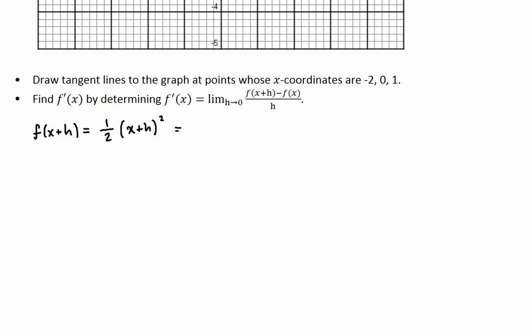And I can expand it or foil it out. So that gives me, remember, x squared plus the double product 2xh plus h squared. And this is just what I obtained from foiling (x+h) times (x+h). So I distribute the one half and I get a half of x squared plus xh, the one half cancels with the 2, plus a half of h squared.